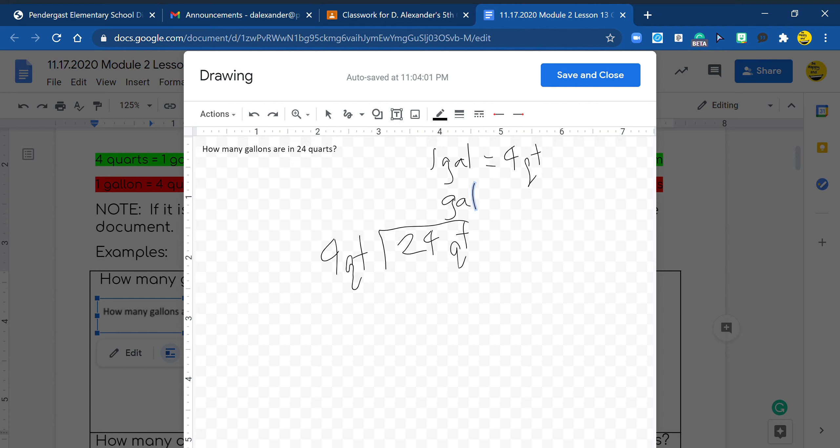So my answer, my quotient, is going to be a gallon. So four goes into 24 how many times you guys? You know what, you guys are right, it is six. So I'm going to put my six in my quotient. I'm going to subtract. I have nothing left over. So four quarts is one gallon, 24 quarts is six gallons.